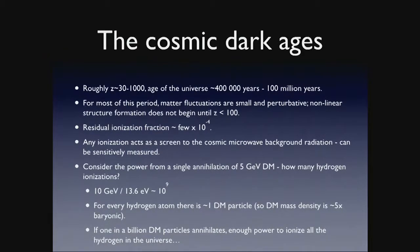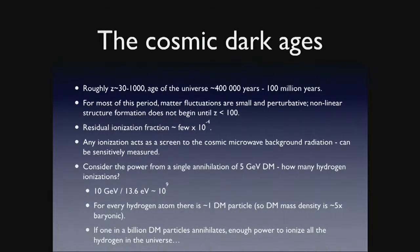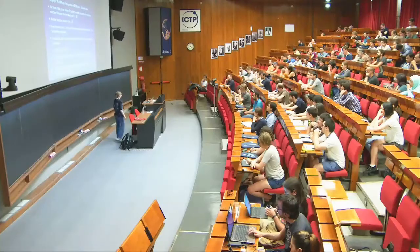We can do a back-of-the-envelope calculation to understand what this might do in terms of ionization. The point is that if you can convert all your mass into energy, that corresponds to a lot of hydrogen ionizations. Suppose we're talking about 5 GeV dark matter. Since the mass density of dark matter is about five times the mass density of protons and neutrons, there's about one dark matter particle for every baryon in the universe. A single dark matter annihilation will give you 10 GeV of energy. Approximating 13.6 eV as about 10 eV, for every annihilation I can ionize 10 to the 9 hydrogen atoms. So if one dark matter particle in 10 to the 9 were to annihilate at the same time, that's enough power to ionize every hydrogen atom in the universe. Even a tiny fraction of annihilating dark matter can have very substantial effects.